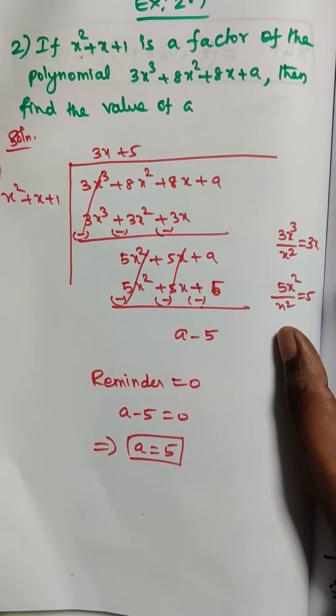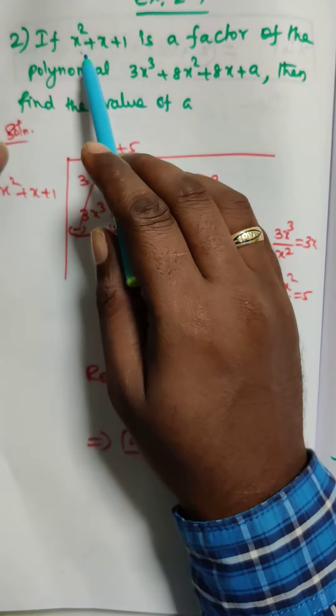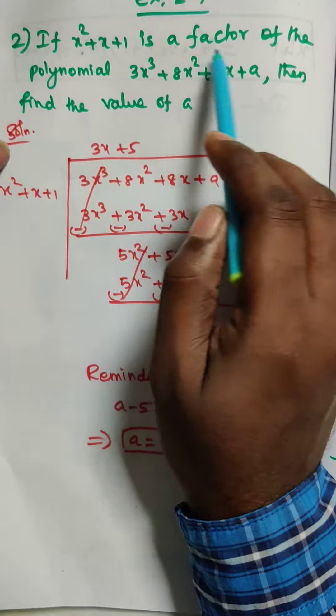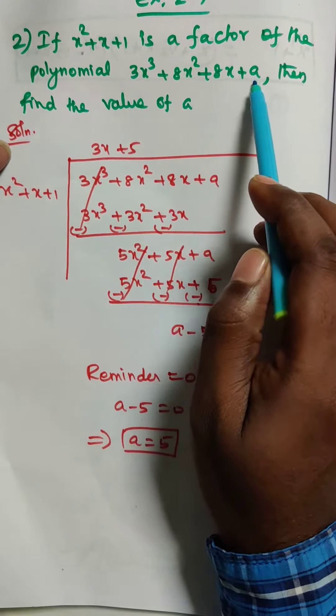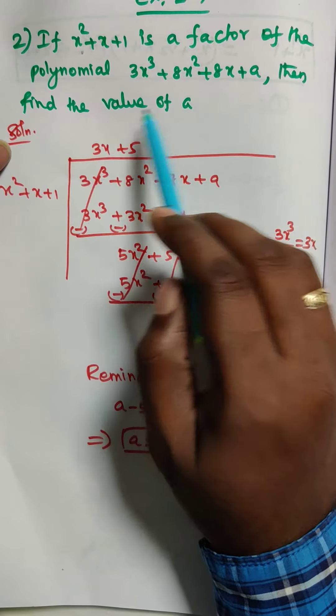Hi students, this is Dinesh here. Today we are going to discuss Exercise 2.7, question number 2. If x² + x + 1 is a factor of the polynomial 3x³ + 8x² + 8x + a, then find the value of a.